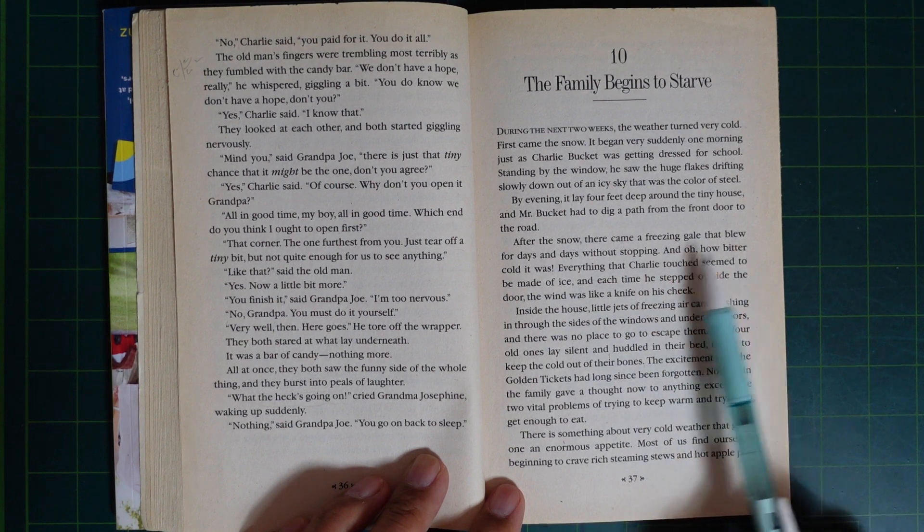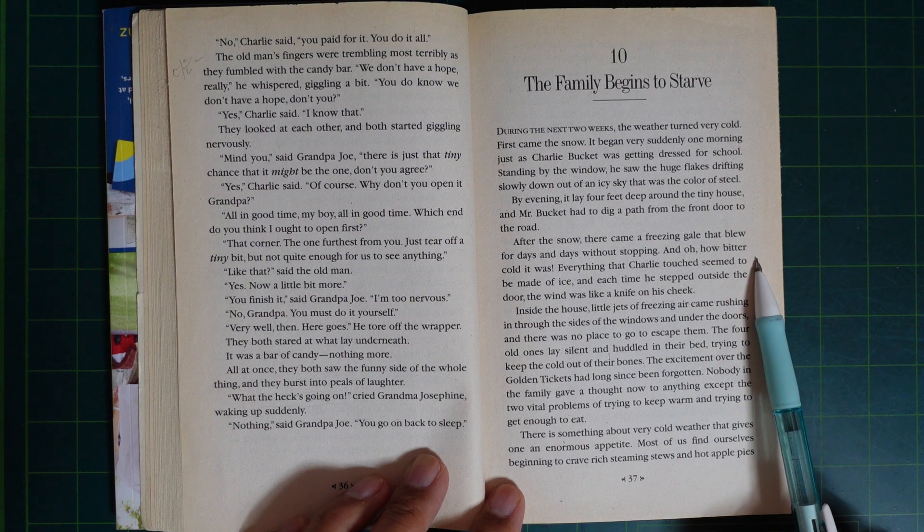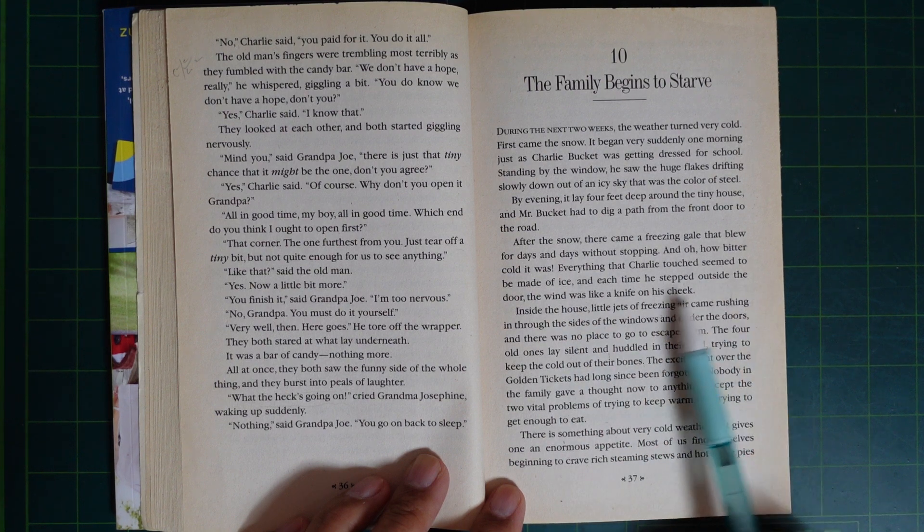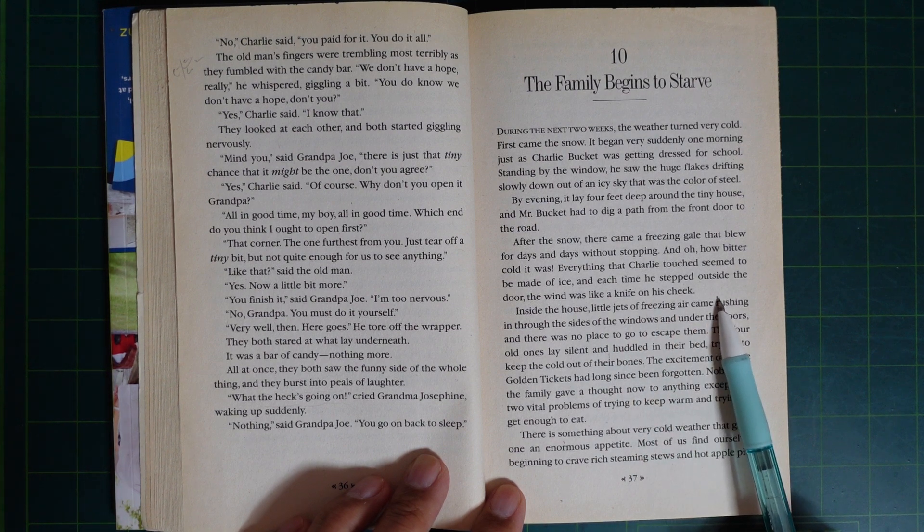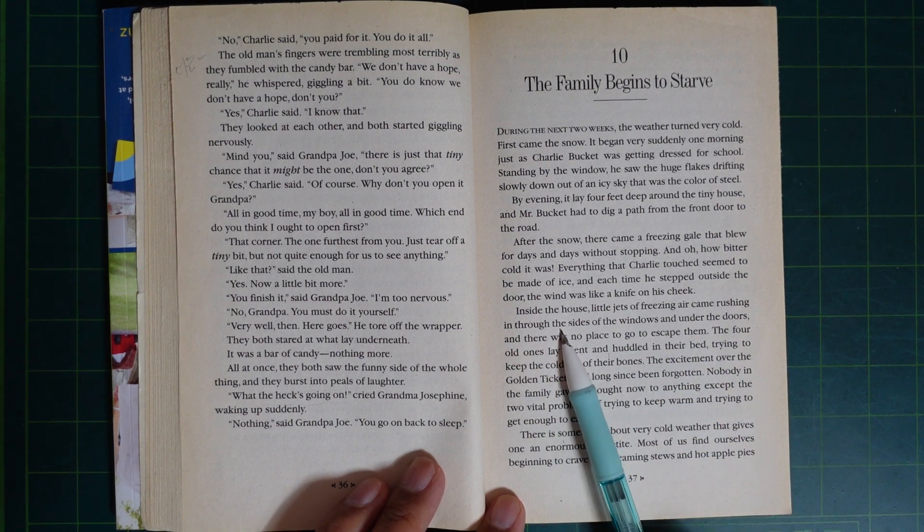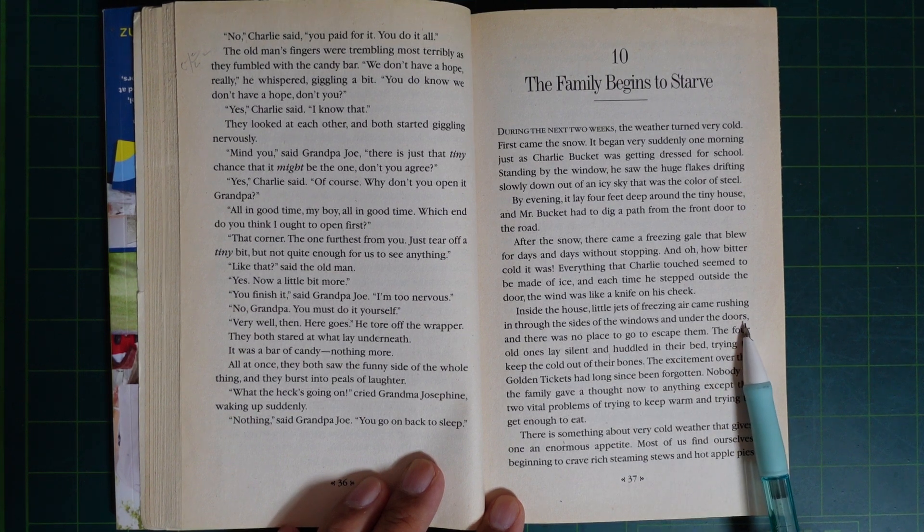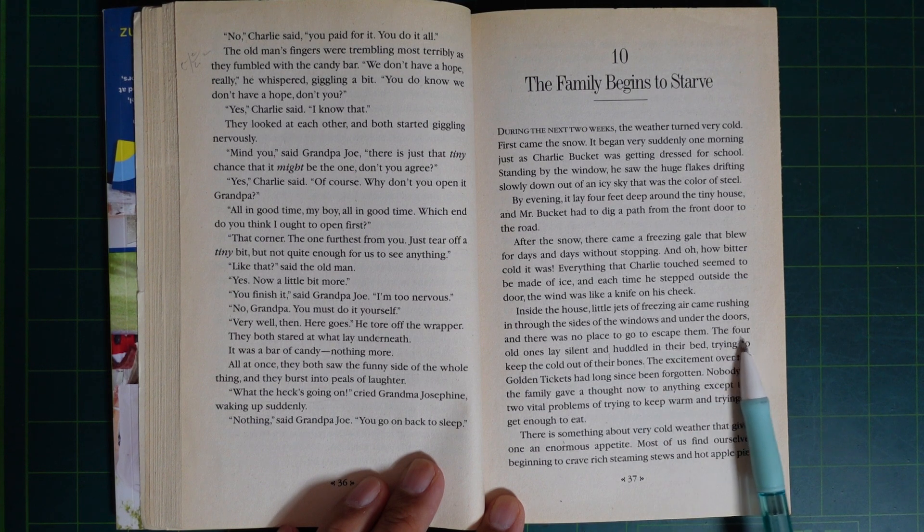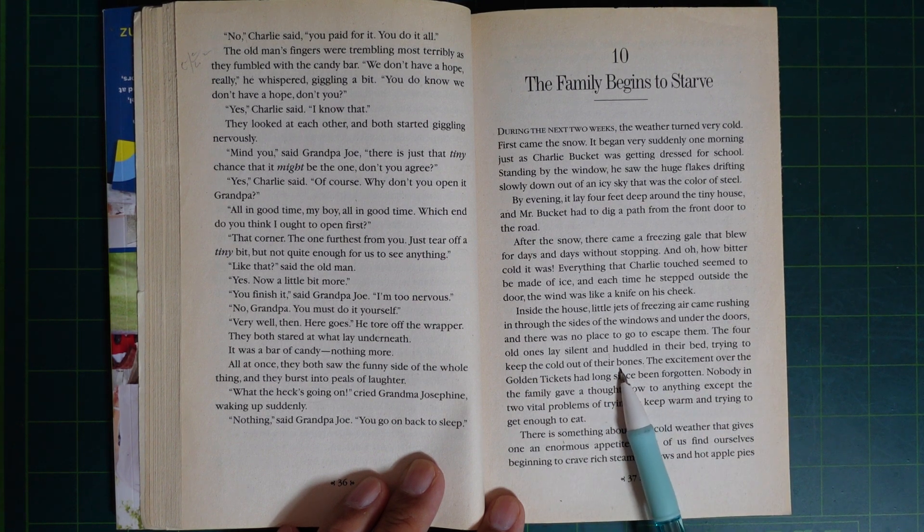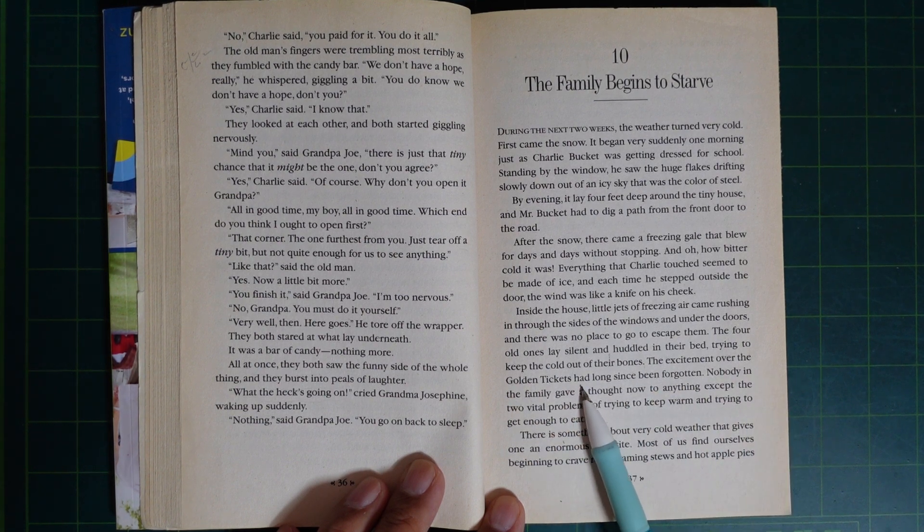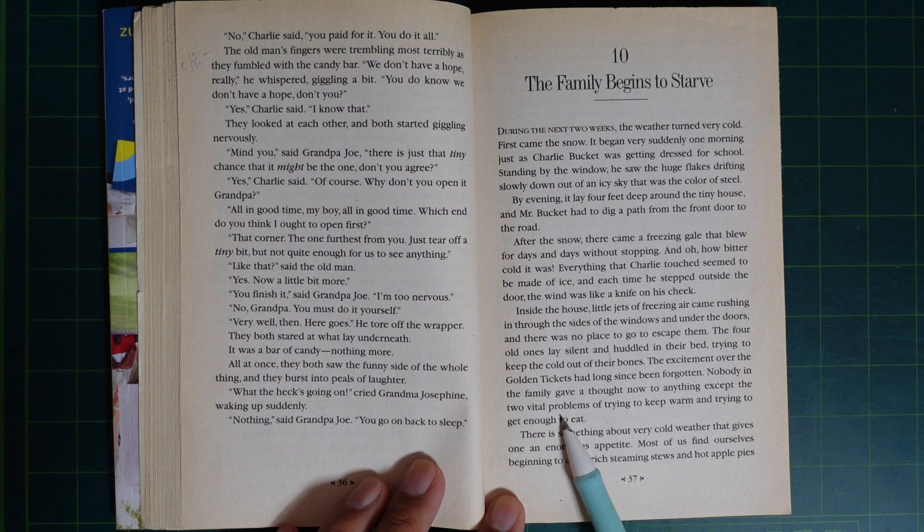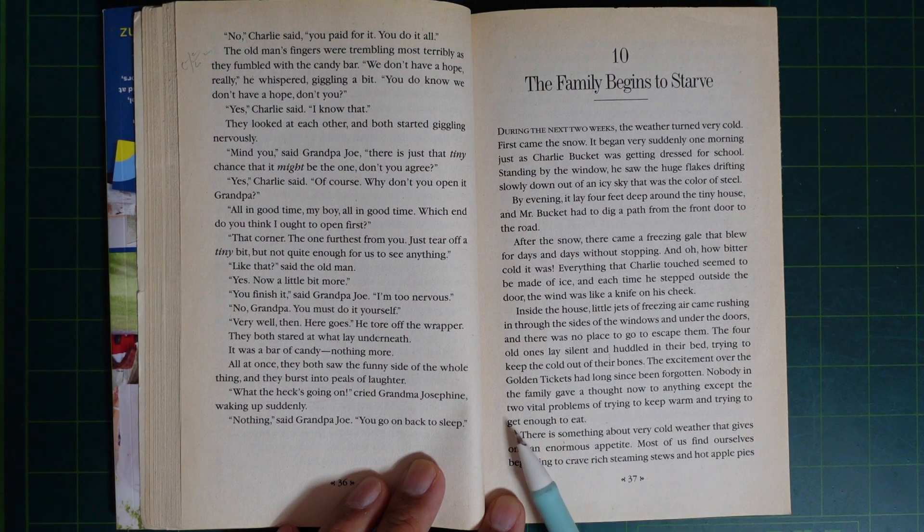After the snow, there came a freezing gale that blew for days and days without stopping. And oh, how bitter it was. Everything that Charlie touched seemed to be made of ice, and each time he stepped outside the door, the wind was like a knife on his cheek. Inside the house, little jets of freezing air came rushing in through the sides of the windows and under the doors, and there was no place to go to escape them. The four old ones lay silent and huddled in their bed, trying to keep the cold out of their bones.